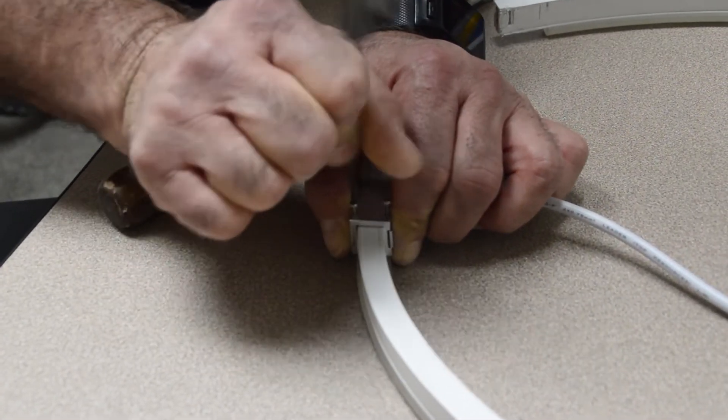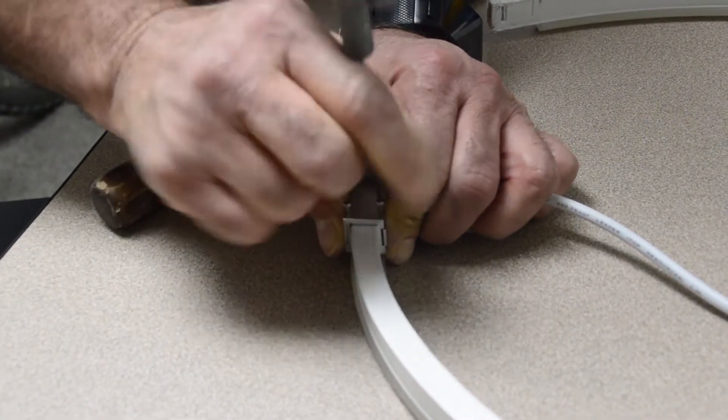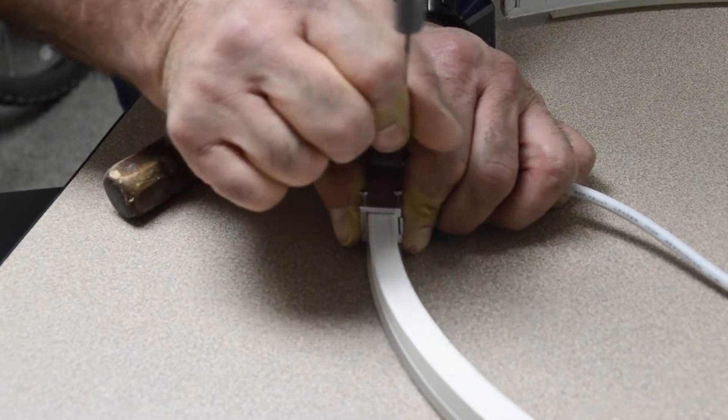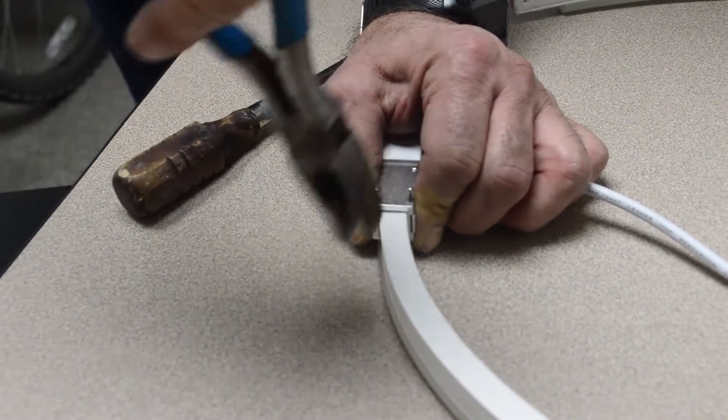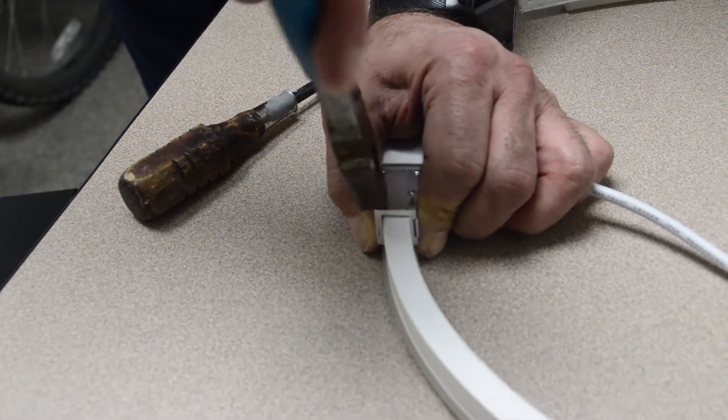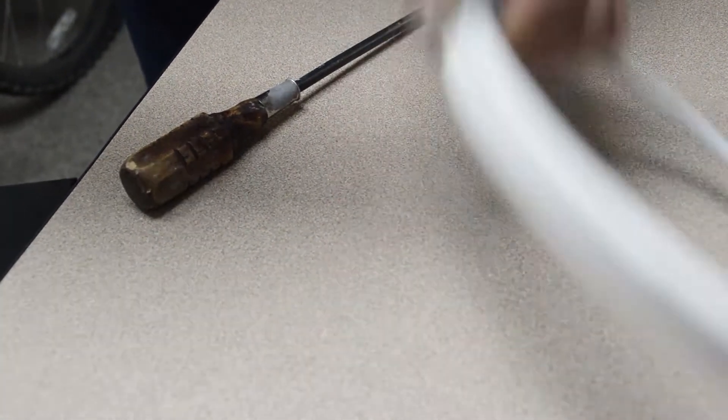If your Allen wrench is slipping, you can also use pliers for this part of the procedure because the screws are ridged to allow for tightening with pliers. Tighten them down and you have a waterproof seal.